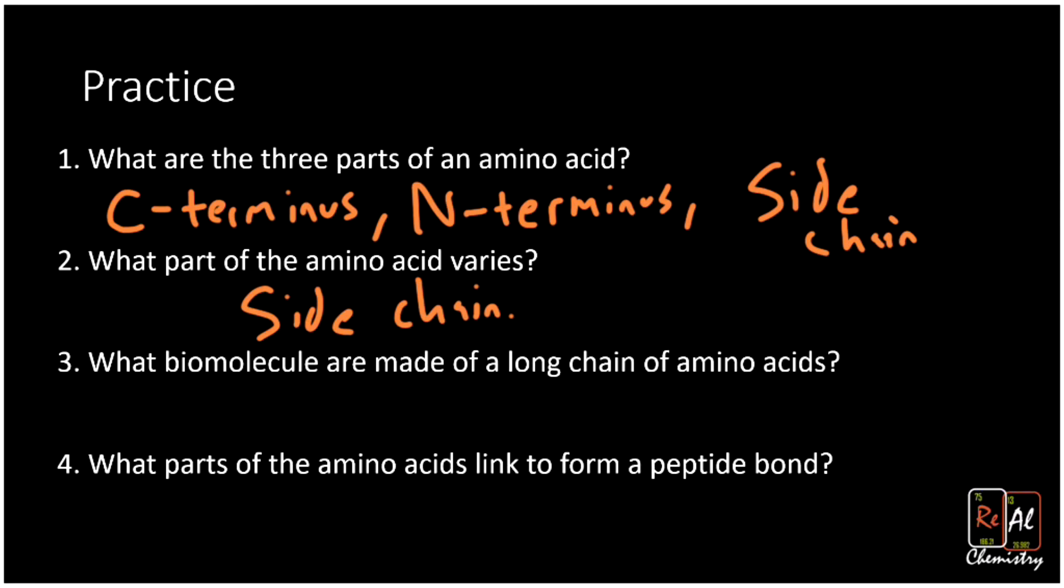What biomolecules are made of a long chain of amino acids? Well, that's a protein. So proteins, remember, are what we get when we build up a really long chain of amino acids. What parts of the amino acid link to form the peptide bond? And that's the C-terminus and the N-terminus. They link up and connect each other to start to build a chain to make a protein.